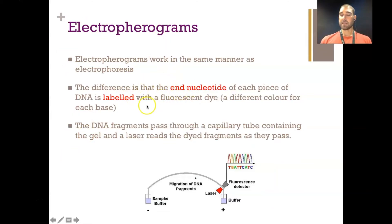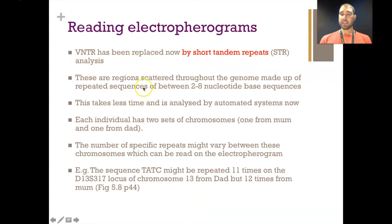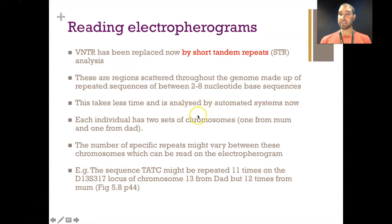The difference is the end nucleotide of each piece of DNA is labelled with a fluorescent dye. The sample goes through an agar gel in a really thin capillary tube, and the samples pass through a laser which reads the fluorescent dye. There's a different colour for each base, so as the DNA passes through, the laser picks up what the base is, and you get a long sequence of A, C, T, and G. VNTRs have been replaced by short tandem repeats, STRs. These are sections scattered throughout the genome, made up of repeated sequences of between two and eight nucleotides — for example AT repeated several times. This is much faster and done automatically through lasers and computers, whereas previously it involved taking gel electrophoresis slabs, photographing them, and analysing them separately.